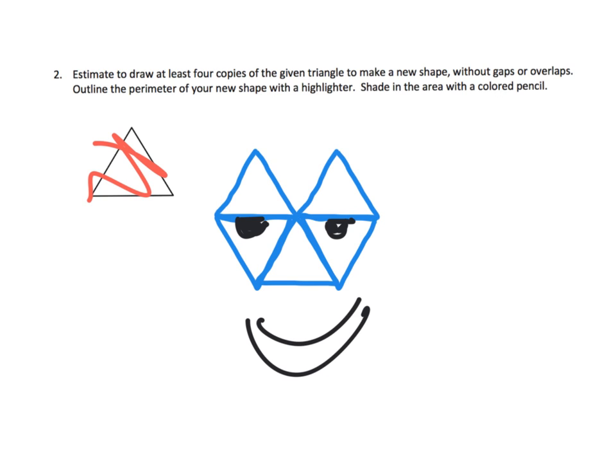It says to shade in the area with a colored pencil, so we should be good students and do our job. We're going to shade in our new area and give him a green mask — so now he's the Green Lantern, one of those Superman kind of characters.